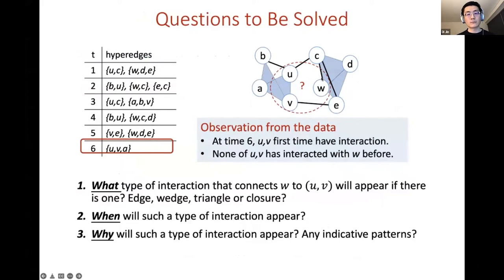Our work wants to answer three questions: what, when and why. As an example in this temporal hypergraph we observed the first time the two nodes u and v get interacted to each other at time six. Now, node w has never interacted with either of these two nodes before. And the first question is we want to answer what type of interaction will connect node w to node u and/or v or both in the future. Say will it be no connection or a wedge or triangle or closure.